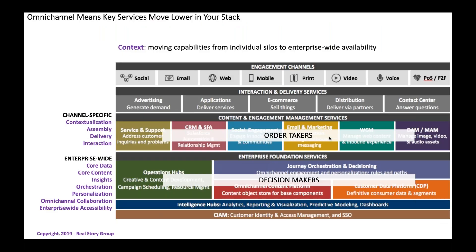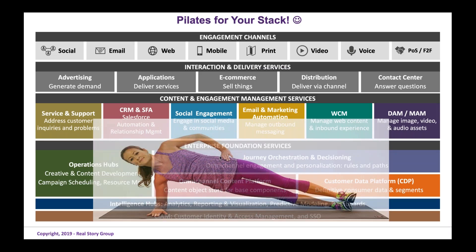Rather than going the DXP route, try to convert your martech stack into more of an omni-channel technology stack through enterprise foundation services. Content and engagement management services in the middle become more like order takers, and your enterprise foundation services become more like decision makers. At the customer-facing tier you still need contextualization, assembly of experiences, delivery, and interaction — but you want to think enterprise-wide around core customer data, core content reused across channels, orchestration and personalization that's not channel-specific, and omni-channel collaboration.